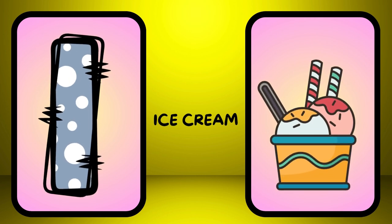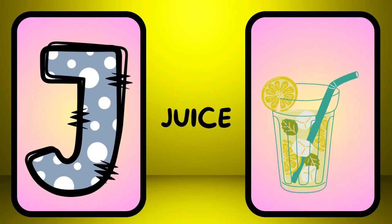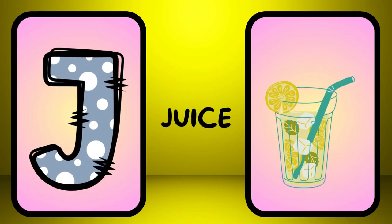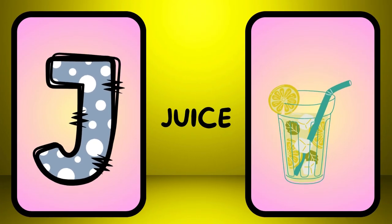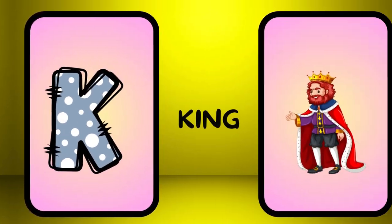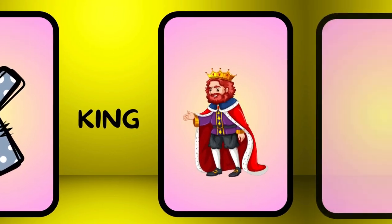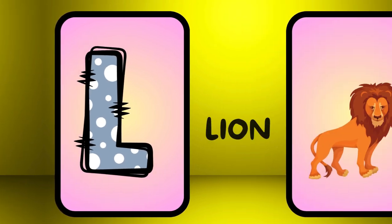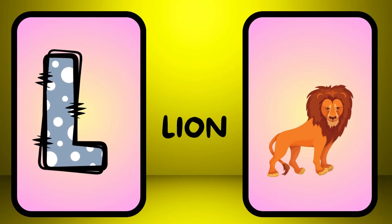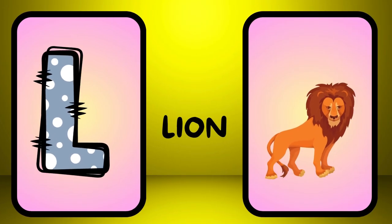I is for ice cream, i-i-ice cream. J is for juice, j-j-juice. K is for king, k-k-king. L is for lion, l-l-lion.